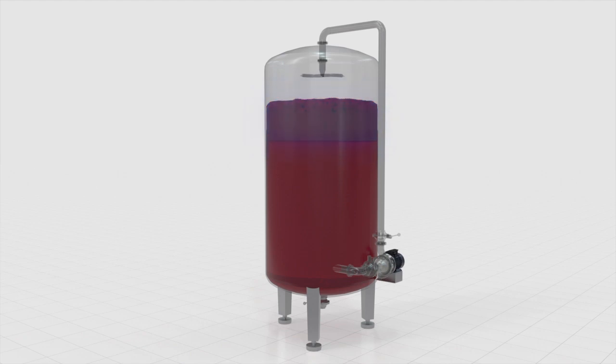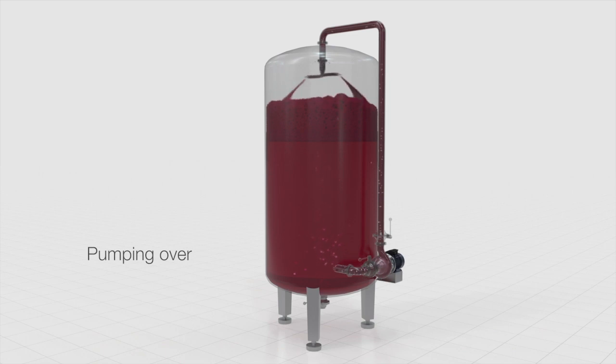Winemakers avoid this by keeping the cap moist. Globally, the most widely used process consists of pumping the must from the bottom over the layer of floating skins. This process is called pumping over. Spraying devices can be used to distribute it evenly over the surface, and they also prevent the formation of channels across the cap that could affect the whole maceration process.